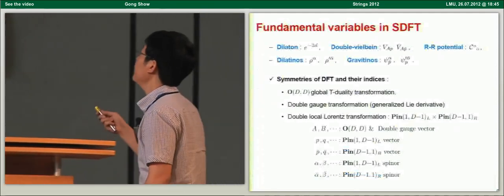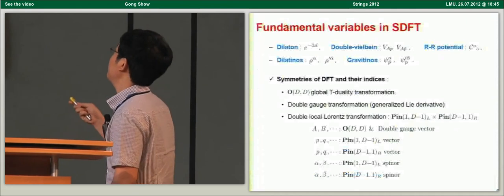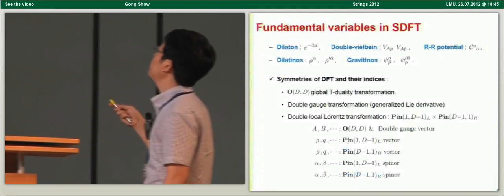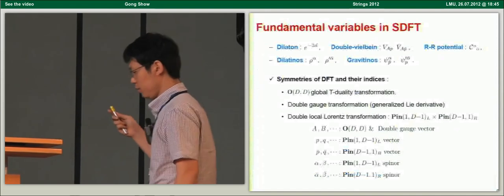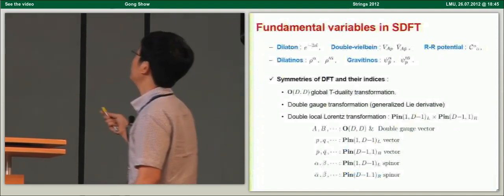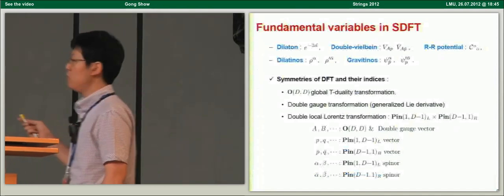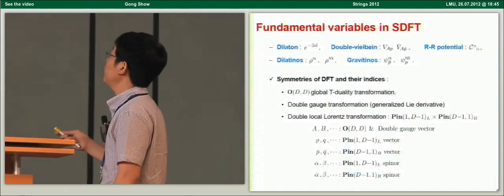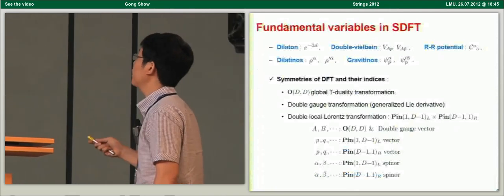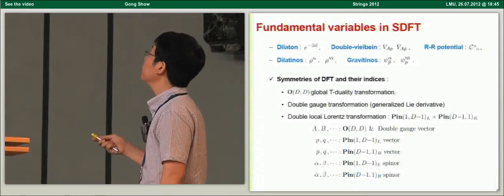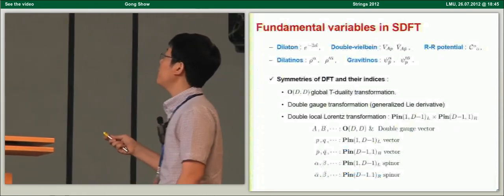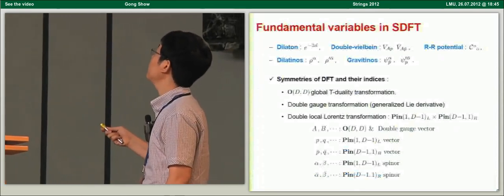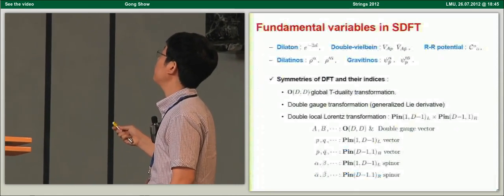Let me start from the fundamental variables in supersymmetric double field theory. For the NS-NS sector, instead of the generalized metric, we introduce a pair of field vielbeins. Type II supersymmetrics introduce the R-R sector and fermionic fields, though due to lack of time I skip the fermionic part. Double field theory enjoys the O(D,D) global symmetry transformation and double gauge transformation through the generalized derivative.